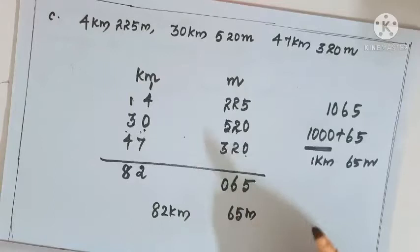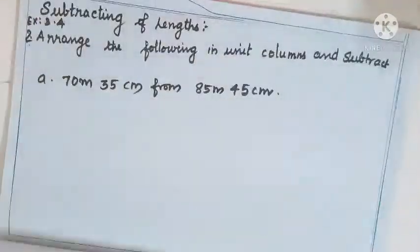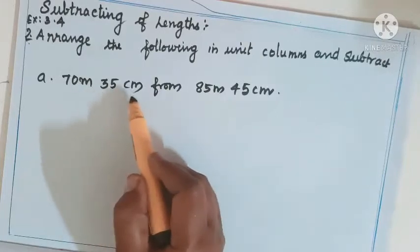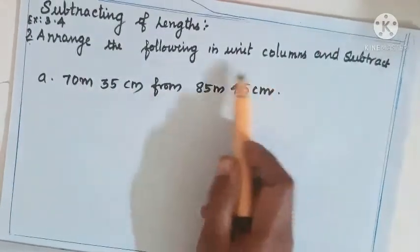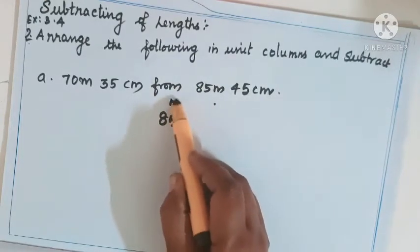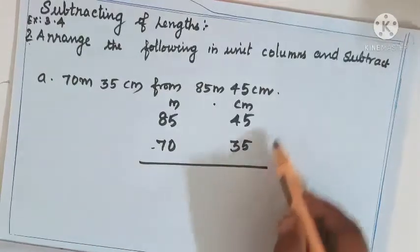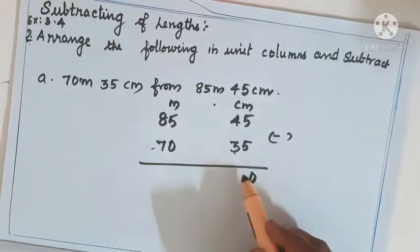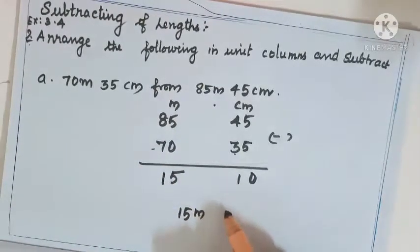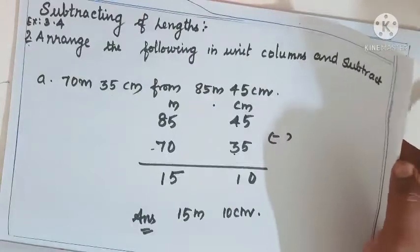Now subtraction of length. Arrange the units in columns and subtract. Subtract 70 meters 35 centimeters from 85 meters 45 centimeters. So write 85 meter 45 centimeter on top, 70 meter 35 centimeter below. Subtract: 5 minus 5 is 0, 4 minus 3 is 1, 5 minus 0 is 5, 8 minus 7 is 1. The answer is 15 meters and 10 centimeters.